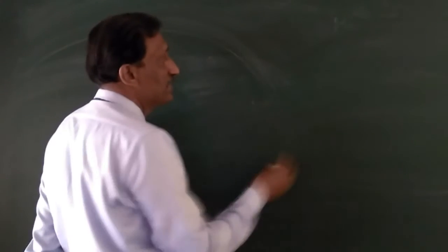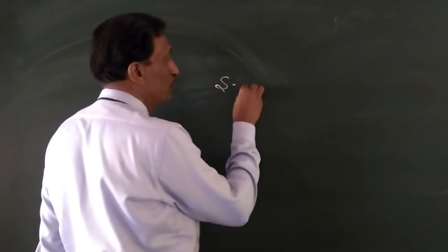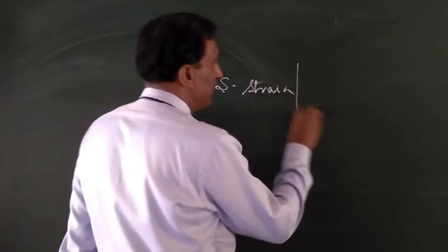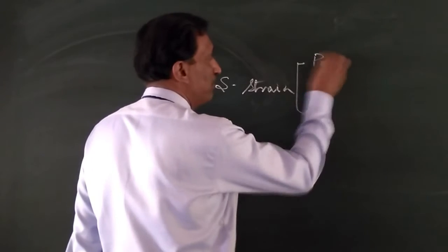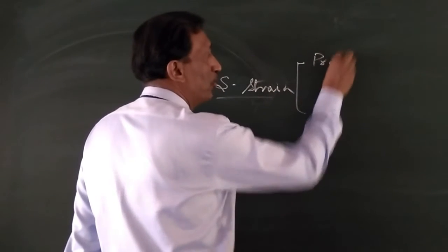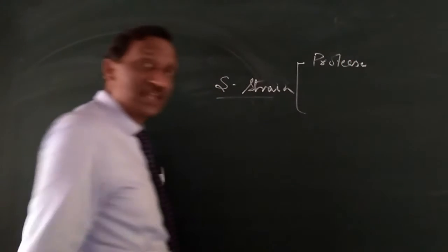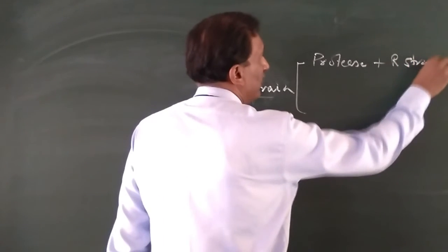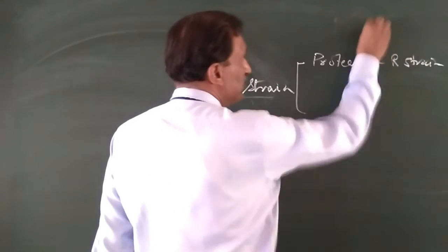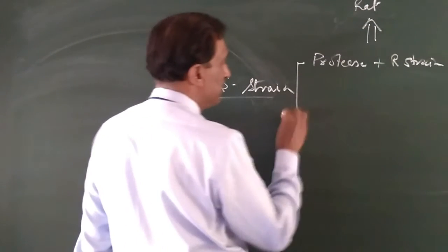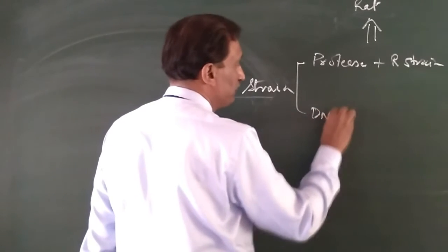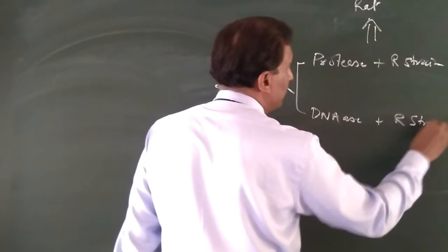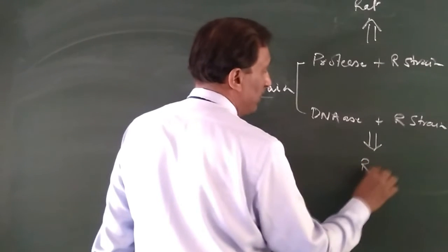For example, this is the smooth strain or S-strain which causes pneumonia. In the first case, he took heat-killed S-strain and put protease enzyme in it — protease will digest all the protein — then R-strain was cultured in that and injected into a rat. In the second case, he used DNase instead, added R-strain, and then injected into a rat.